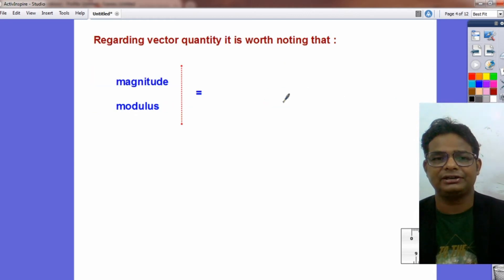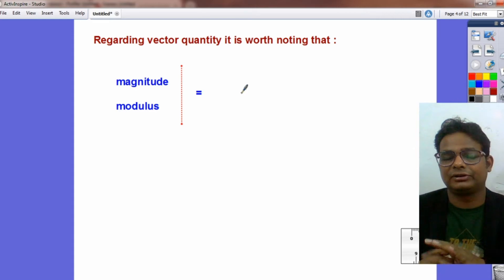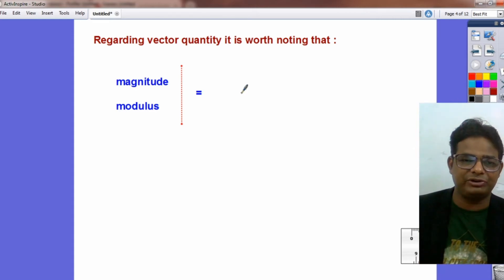To understand this definition, first of all, we should know about magnitude. In physics, what we call magnitude, in mathematics, we call modulus. Both magnitude and modulus have the same meaning. That is length.